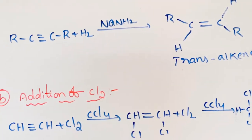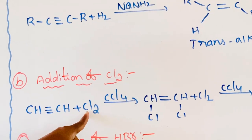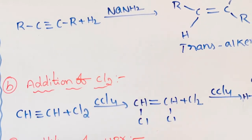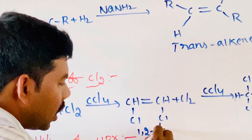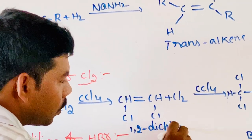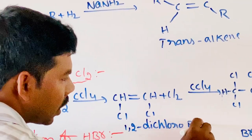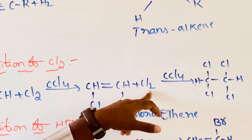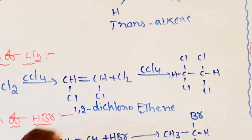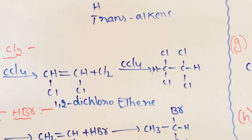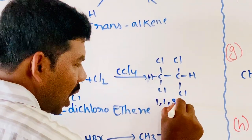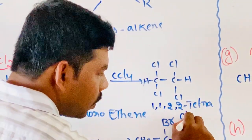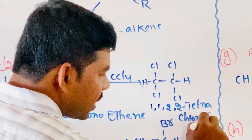Next, addition of chlorine. Ethyne reacts with chlorine in the presence of carbon tetrachloride to give 1,2-dichloroethene. This 1,2-dichloroethene on further reaction with chlorine in the presence of carbon tetrachloride gives 1,1,2,2-tetrachloroethane.